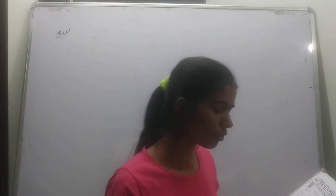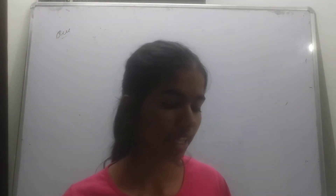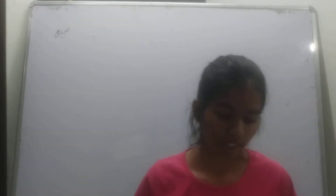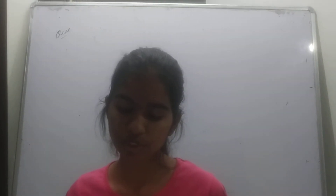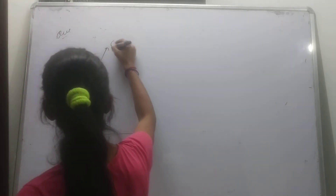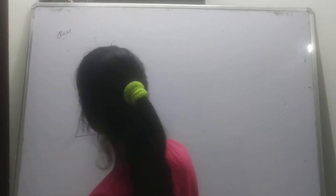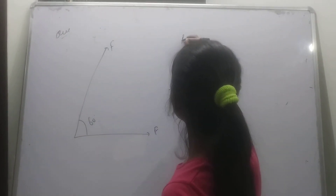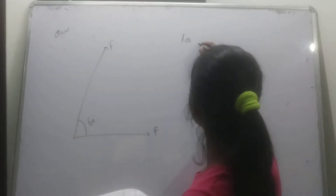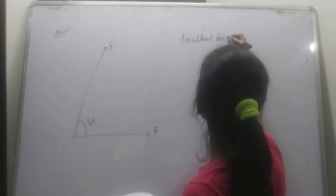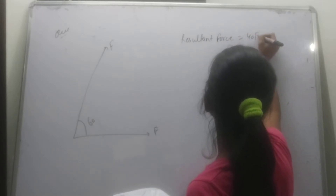The next question: two equal forces are acting at a point with an angle of 60 degrees between them. If the resultant force is equal to 40√3 N, find the magnitude of each force. Let each of the two equal forces be F.